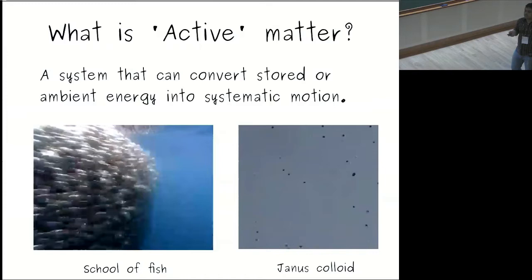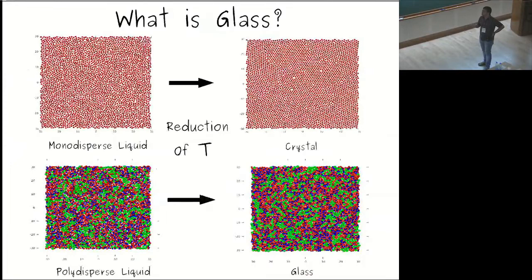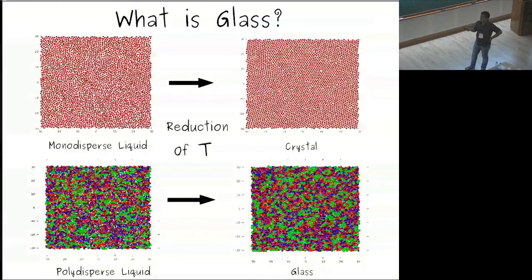Next: what is glass? If you take a monodisperse liquid and cool it down, it will form a crystal. But if you take a polydisperse liquid and do the same, you will get a solid that is not ordered — it's not a crystal. For our purpose, we call it a glass. It's a disordered solid.